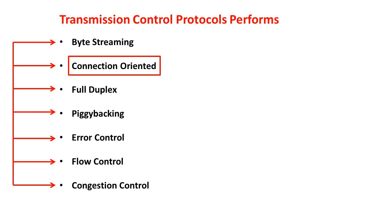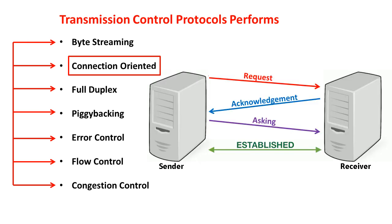TCP is a connection-oriented service and it uses three-way handshaking. A connection is established and maintained until the application programs at each end have finished exchanging messages. The three-way handshaking process involves: the sender sends a request to the receiver for establishing the connection; the receiver acknowledges the request; then the sender informs the receiver that the data will be sent. This ensures the reliability of the data so that the full data will be received at the receiver end.